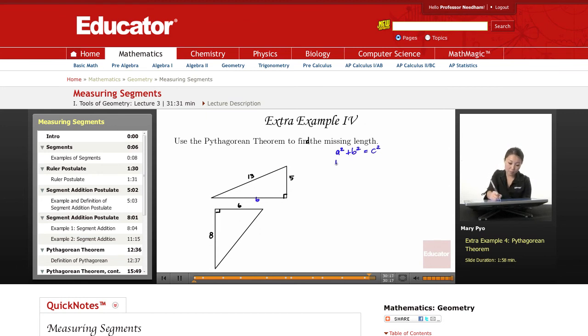So a squared is 5 squared plus b squared equals 13 squared. 5 squared is 25 plus b squared equals 169, and then subtract the 25, so b squared equals 144, then b equals 12. So this is 12.